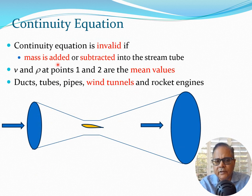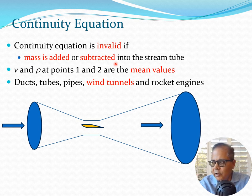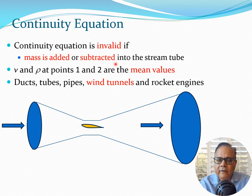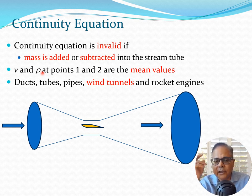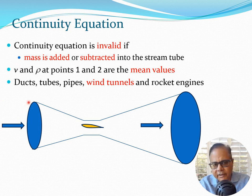The continuity equation is invalid if mass is added or subtracted from the stream tube — for example, if fuel is injected. Also note that the velocity and density values used here are mean values, since in reality velocity fluctuates across the cross-section. With that caveat, the continuity equation is useful for a large number of closed systems: ducts, tubes, pipes, wind tunnels, rocket engines, and so on.